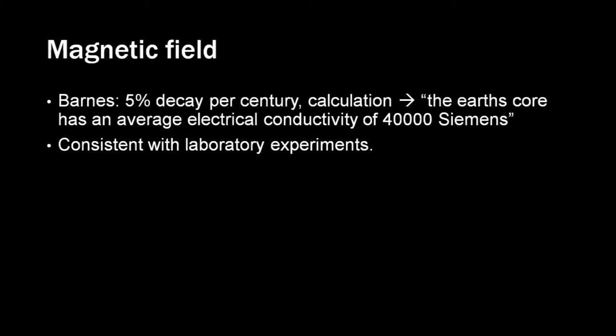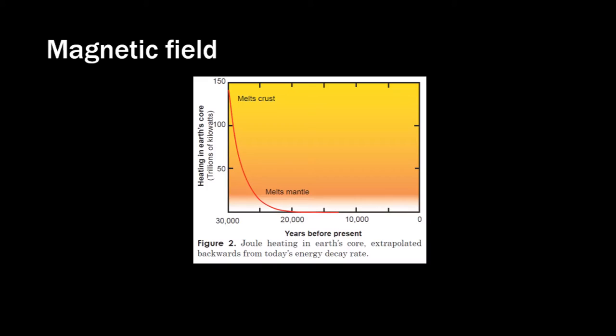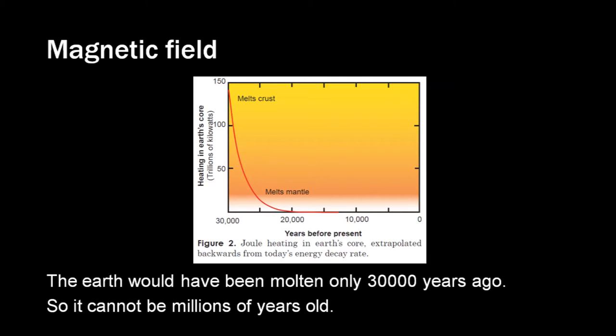So we can compare this with decay that we measure in laboratory experiments. And when we do that, we see that it's perfectly consistent. Based on this knowledge, we can say that the Earth's magnetic field can only decrease. We can also reverse calculate to find out what the Earth's magnetic field should be like in the past. When we do that, we see that the entire world would have been molten only 30,000 years ago, because the Earth's magnetic field was so powerful back then. So the Earth cannot be millions of years old.